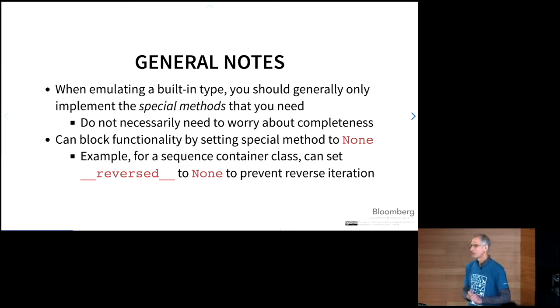If you want to block specific functionality, you can essentially set the special method in your class to be none, and then that will prevent that type of operation. One example would be there's a special method, Dunder reversed, which allows an optimization for reverse iteration across sequences. If your sequence doesn't support efficient reverse iteration, then you could block that by setting Dunder reversed to none.